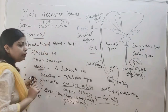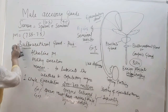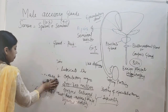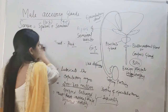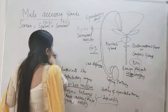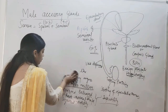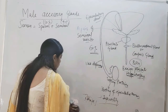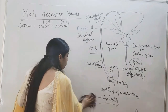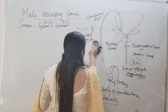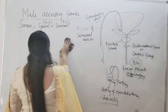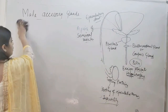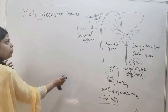Next let us discuss about the structure of a sperm. Sperm is a microscopic cell that has to be observed under a microscope. It has a shape just like a tadpole.